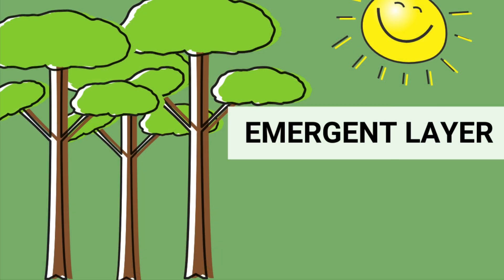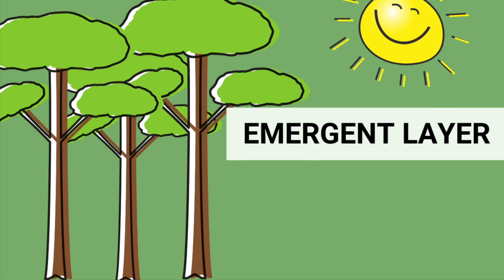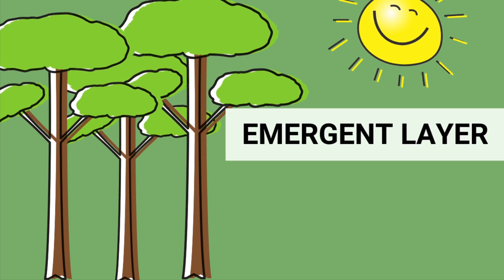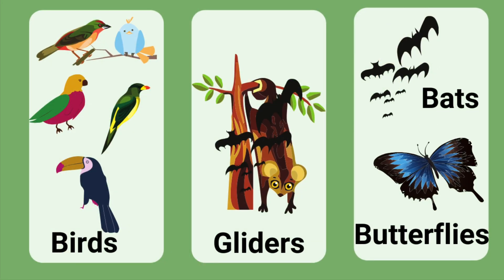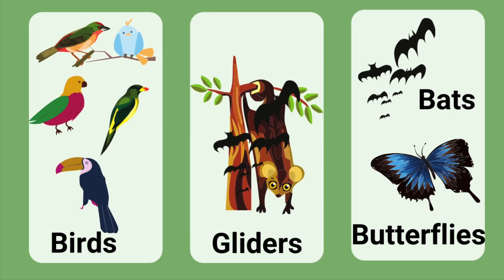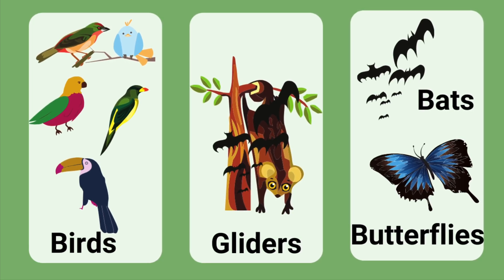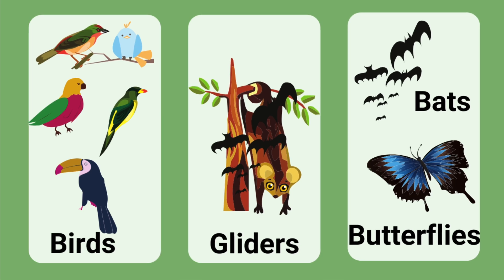The top layer of the rainforest is the emergent layer. It is very sunny here, and only the strongest and tallest plants and trees reach this level. The animals living in this layer include birds, gliders, bats, and butterflies.